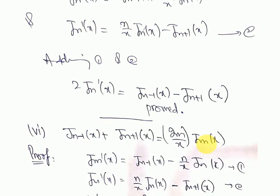To prove the sixth recurrence relation, we again use the third and fourth recurrence relations. The left-hand side requires a sum of J(n-1) and J(n+1) terms. If we simply add the two equations, the (n/x)·Jn terms cancel — but we need them. So instead, we will subtract equation two from equation one.